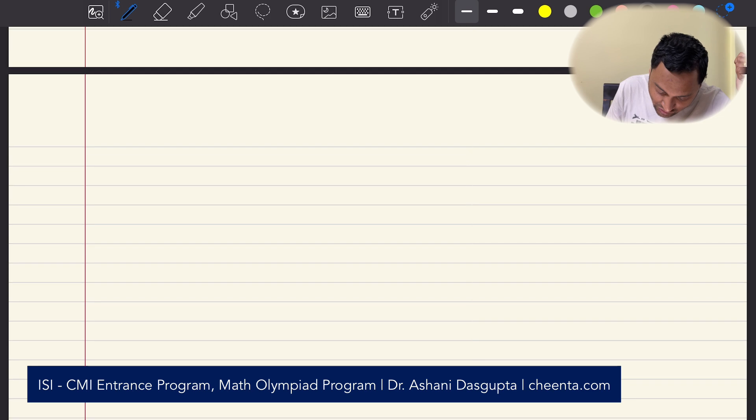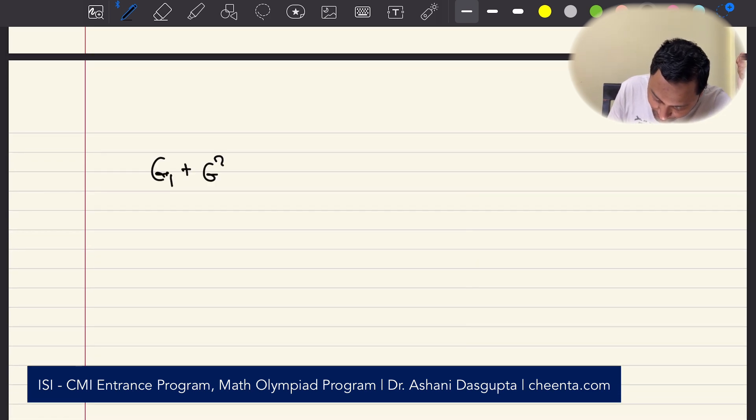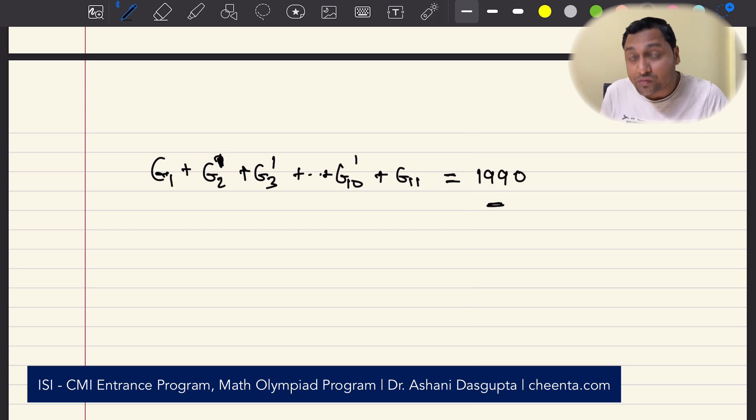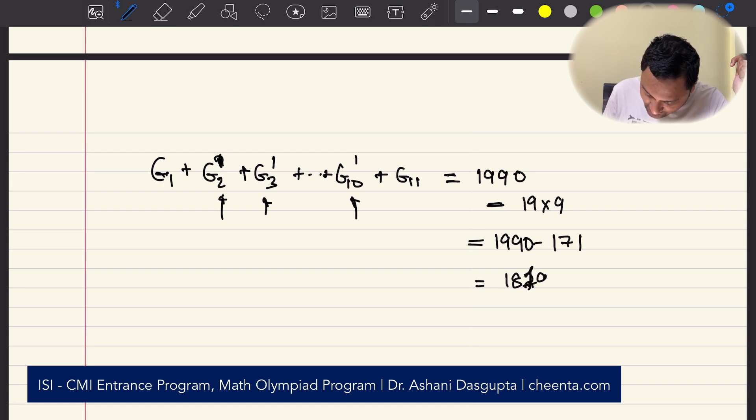So, now what we have is: G1 plus G2 prime plus G3 prime plus up to G10 prime plus G11. This is 1990 minus, now what you have to do is, you have to delete all the 19s that you have inserted in G2, G3, up to G10. You have already used up those values. So, 19 times 9, there are 9 gaps where you have put 19s. So, 19 times 9. So, 1990 minus 171. So, that is 1819.